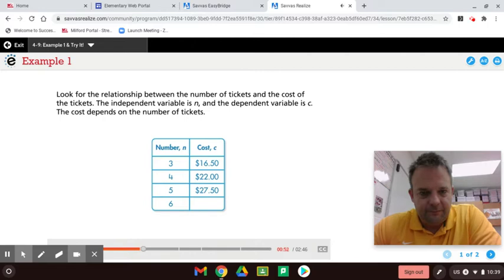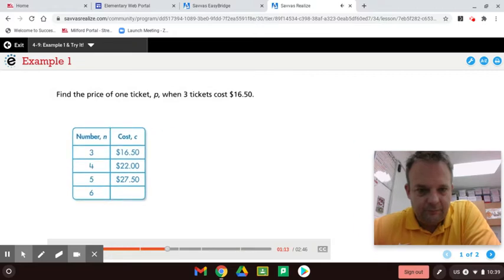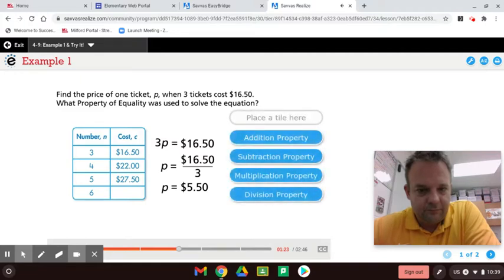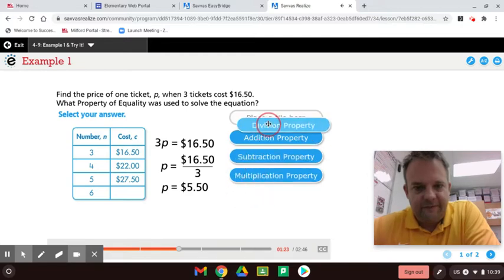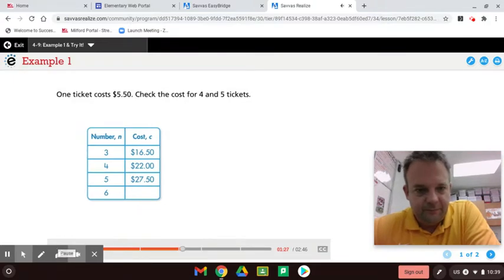Look for the relationship between the number of tickets and the cost of the tickets. The independent variable is N and the dependent variable is C. The cost depends on the number of tickets. To make sense of the problem, find the price of one ticket. Find the price of one ticket P when three tickets cost $16.50. What property of equality was used to solve the equation? The division property of equality. One ticket costs $5.50.